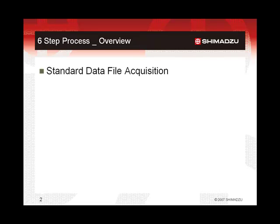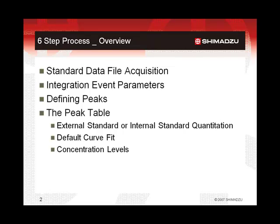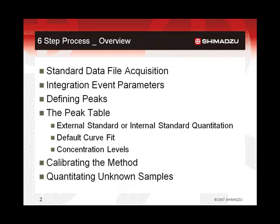The complete process involves six steps from beginning to end. This presentation will include description of all six steps, which include: standard data file acquisition; setting of appropriate integration event parameters; defining the peaks of interest for quantitation; setting the required information in the peak table, which includes choice of external standard or internal standard quantitation, selecting a default calibration curve fit, and setting the concentration levels for the calibration standards; calibrating the method based on analysis of the calibration standard data files; and using the calibrated method to quantitate unknown or non-standard samples.